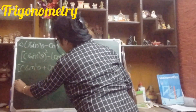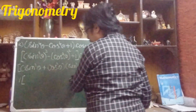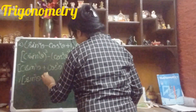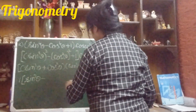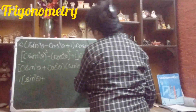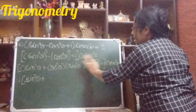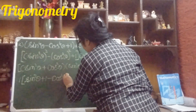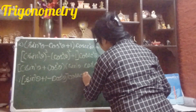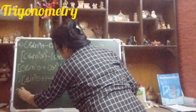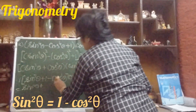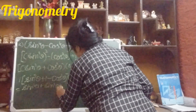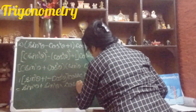Now we have (sin²θ − cos²θ + 1)·cosec²θ. Inside the bracket: sin²θ + 1 minus cos²θ. Now 1 minus cos²θ equals sin²θ. So sin²θ plus sin²θ equals 2sin²θ. So we have 2sin²θ multiplied by cosec²θ.